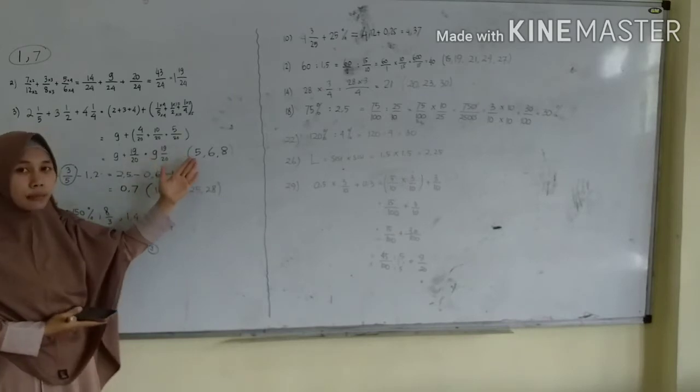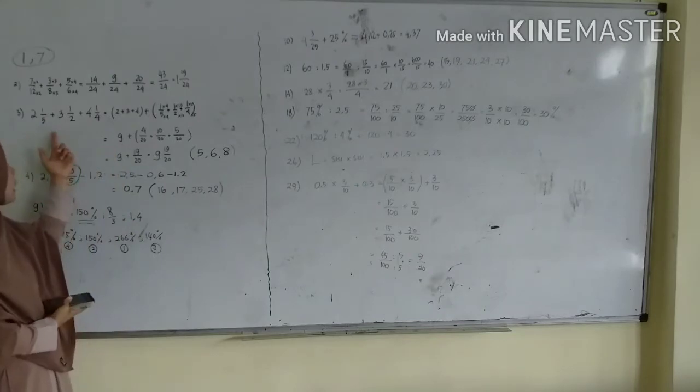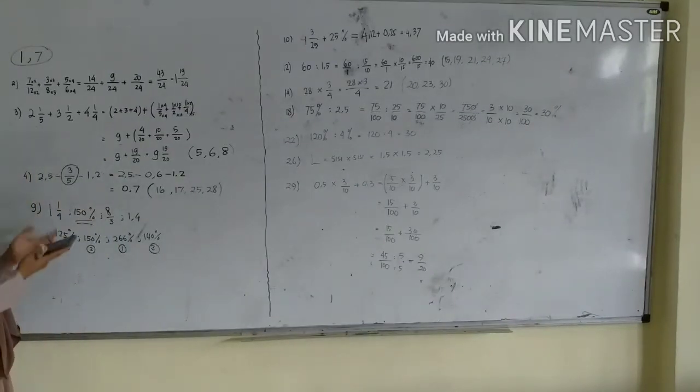Kalau sudah ditambahkan menjadi 9 19 per 20 ya. Nah, nomor 3 ini caranya sama dengan nomor 5, nomor 6, dan nomor 8 ya, penjumlahan. Kemudian lanjut ke nomor 4.